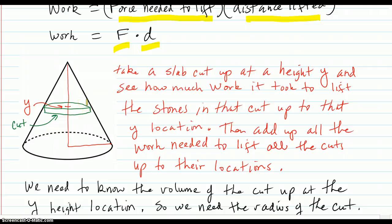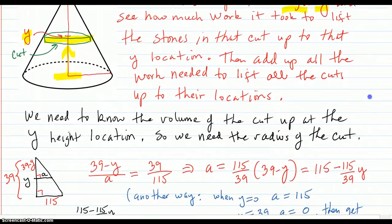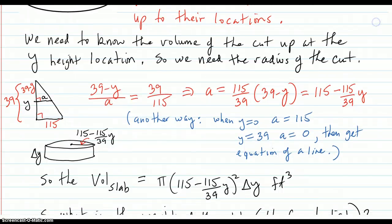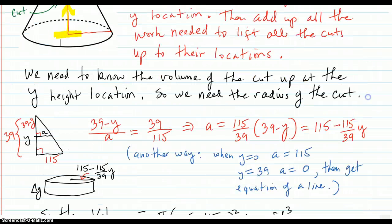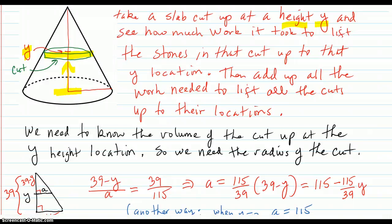So here's our cone. The strategy is to find out the weight of the stones on a slab cut up at a Y height. So slice that cone horizontally up at a Y height. And see how much work it took to lift it from the ground up there to the Y height. And then all we have to do is add all those works up using our calculus, and we'll have the answer. So we need to know the volume of the cut up at the Y location.